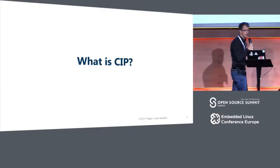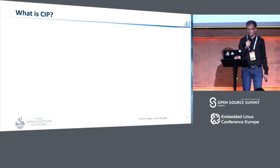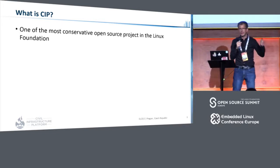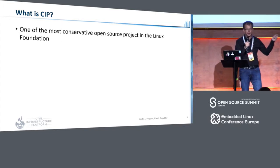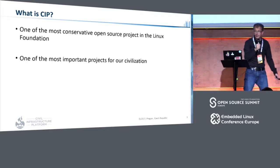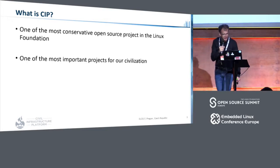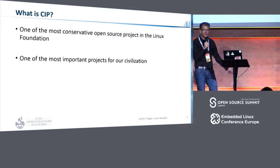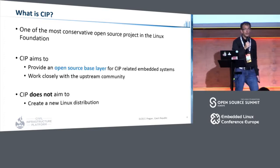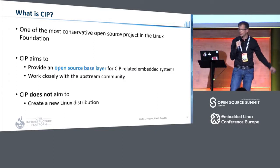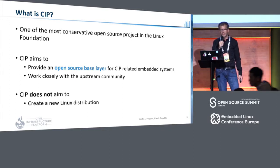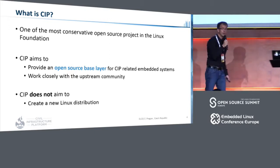So what is CIP? Compared to many other projects you see here at the conference, it does not have the latest and greatest new features. It's one of the most conservative projects you will find at the conference. But nevertheless, it's one of the most important projects for our civilization. What we are going to do is provide an open-source base layer for embedded systems used in civil infrastructure systems. We are not a new Linux distribution — it's much less.